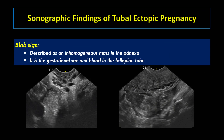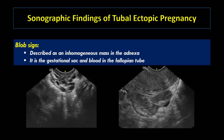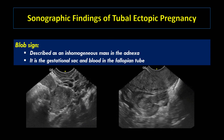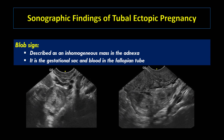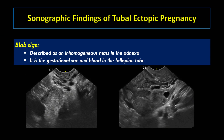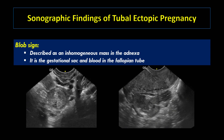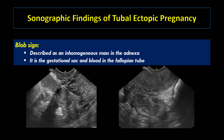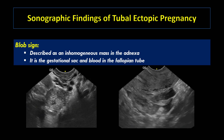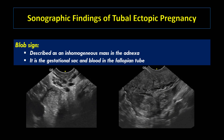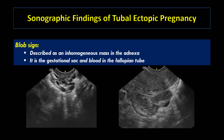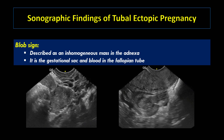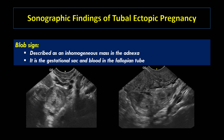The second sonographic sign of tubal ectopic pregnancy is the blob sign. It is described as an inhomogeneous mass in the adnexa — it is the gestational sac and blood in the fallopian tube. As you can see in these two scan clips, the blob sign is seen in axial section and longitudinal section.